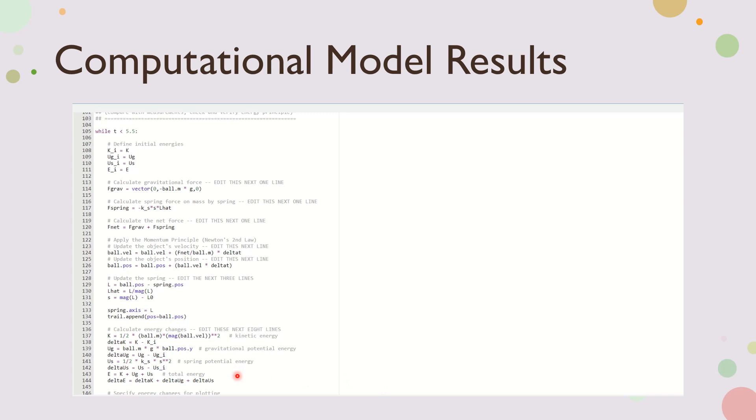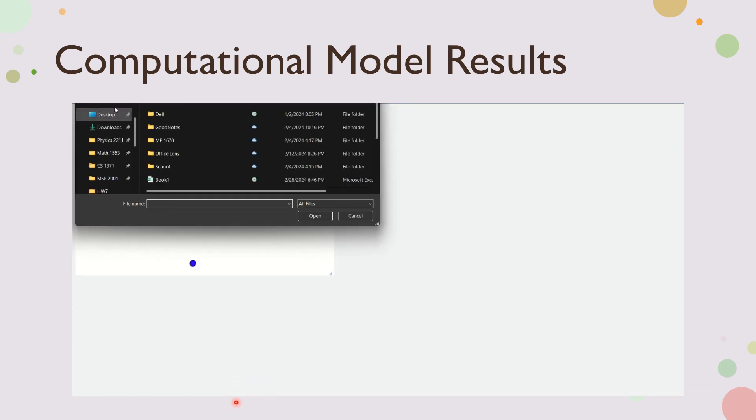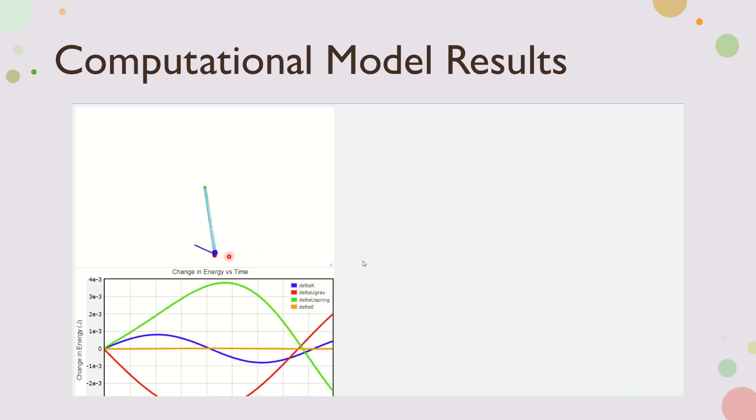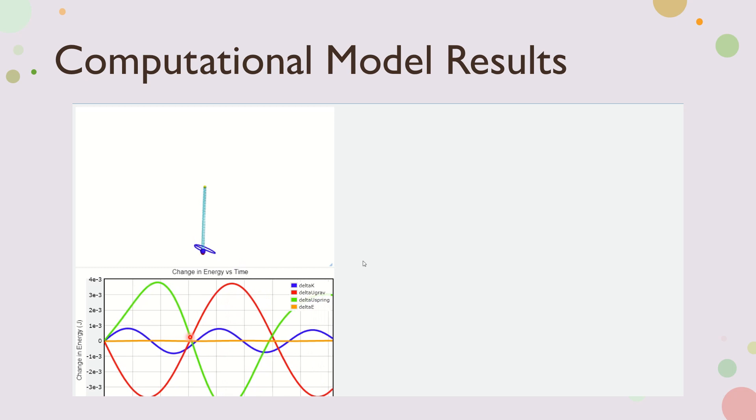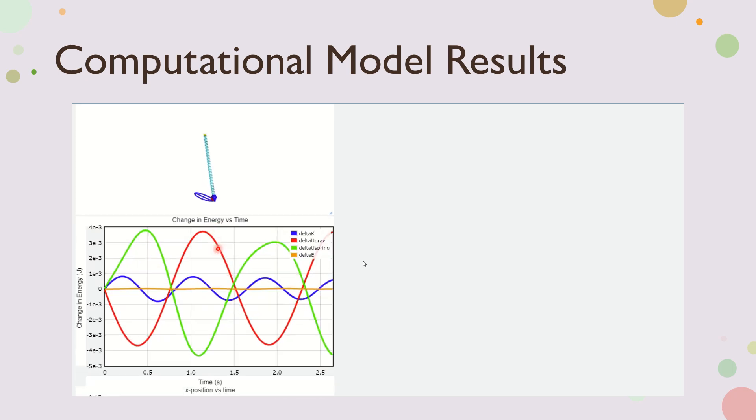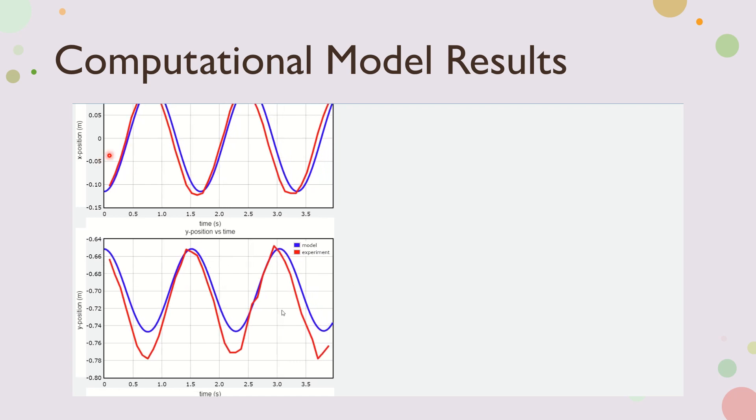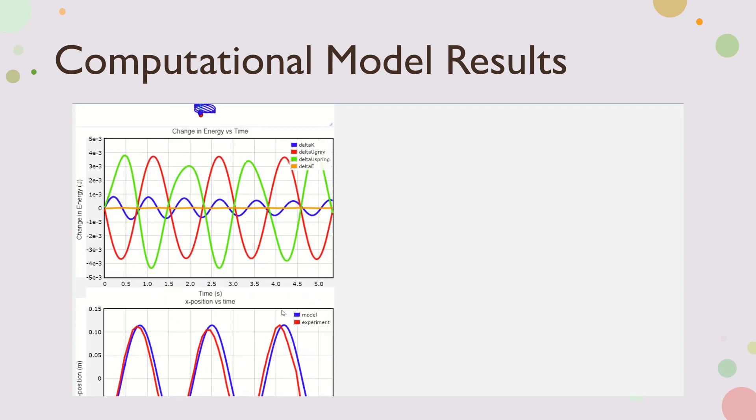These are the computational model results. As you can see, you choose the file. I chose the data from the tracker. And then this is the spring oscillating in real time. This graph is the change in energy versus time. This is the x position versus time and the y position versus time. And I'll get into these later. I just wanted to show how.